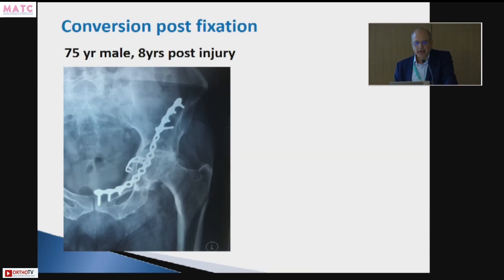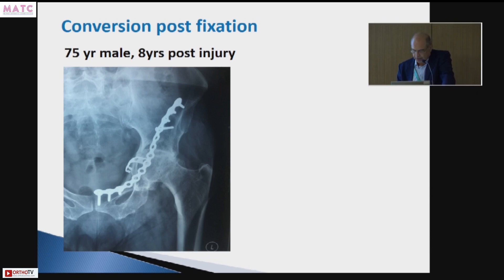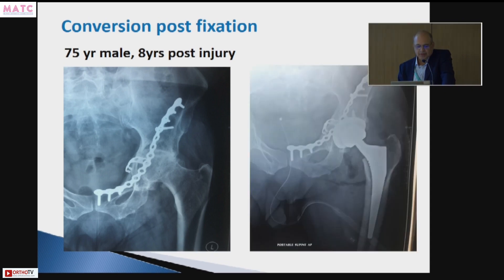Now let's look at a post-fixation scenario. For acetabular fractures, this is the ideal situation — when good fixation has been done, you are essentially operating on an acetabulum which is complete, and the end result is probably the best of the three scenarios. Here you can see an acetabular fracture with secondary osteoarthritis — a straightforward, simple hip where no additional intervention is involved at all.